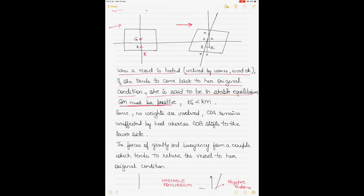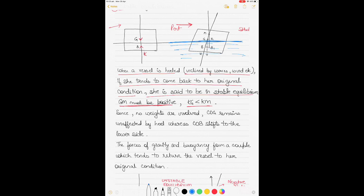For stable equilibrium to occur, the GM must be positive — that is, the metacentric height must be positive, meaning KG should be less than KM. In the diagram, the vessel is heeled to the starboard side. The black line, now highlighted in blue, denotes the water level. The center of buoyancy shifts — not the center of gravity — because the center of gravity only shifts with movement of weights.